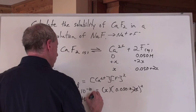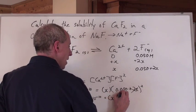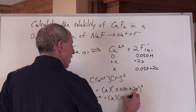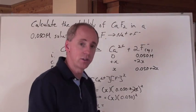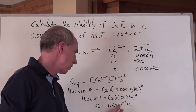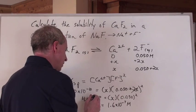So really, it's 4.0 times 10 to the negative 10 equals X times 0.050 squared. And now when you do all this math, you get X equal to 1.6 times 10 to the negative 7 moles per liter when you solve for X by squaring that, dividing it into that number.